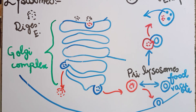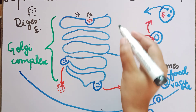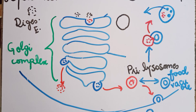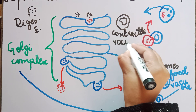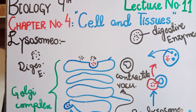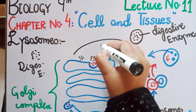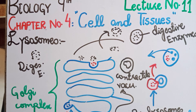These food particles will be released inside the cell so that the cell can use them for energy production. Lysosomes not only help with food digestion but also help deal with waste material. The cell produces a large number of waste materials which are not released into the cytoplasm but are engulfed and enclosed in a membrane structure called a contractile vacuole. The lysosome fuses with this vacuole and breaks down the waste into simpler components. I hope you now have a concept of lysosomes.